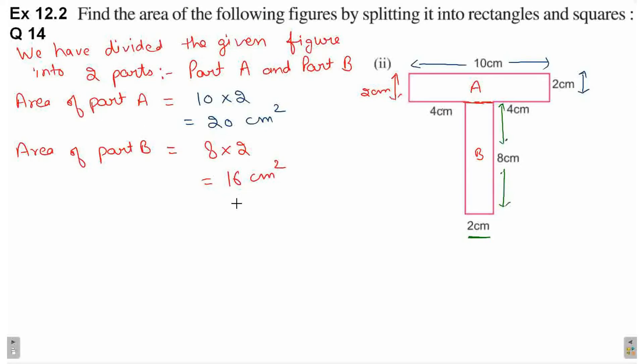Now to find the total area, we will add both areas together. Therefore, total area of the figure equals area of part A plus area of part B, which is 20 plus 16, equals 36 cm square.